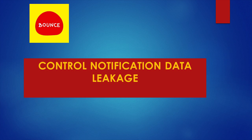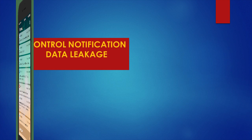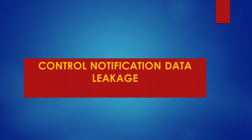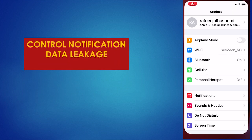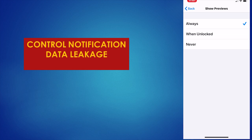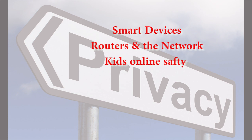Data leakage is another threat to control. This involves controlling notification data leakage — when you receive notifications, they are displayed on your screen even when locked. To prevent showing important notifications on a locked screen, go to Settings, then Notifications. At the top you will see 'Show Previews' — set this to 'When Unlocked' so notifications are only displayed when your phone is unlocked.